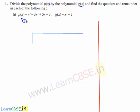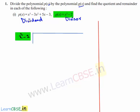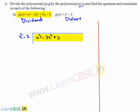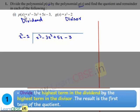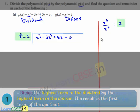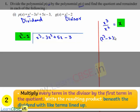p of x becomes the dividend and g of x becomes the divisor. So the divisor x square minus 2 is written here and the dividend x cube minus 3x square plus 5x minus 3 is written here. The highest degree term of the dividend is x cube and the highest degree term of the divisor is x square. So on dividing x cube by x square, we will be getting x. The divisor is x square minus 2, and when it is multiplied by x, we get x cube minus 2x.